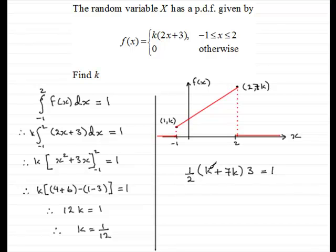So if we now work this out, we've got k plus 7k, which is 8k. I could half the 8k and get 4k. 4k times 3 is 12k. So you've got, therefore, 12k equals 1, and therefore, k equals 1 twelfth.